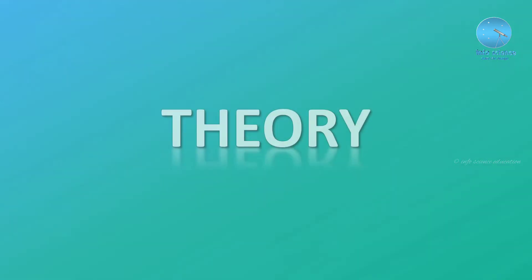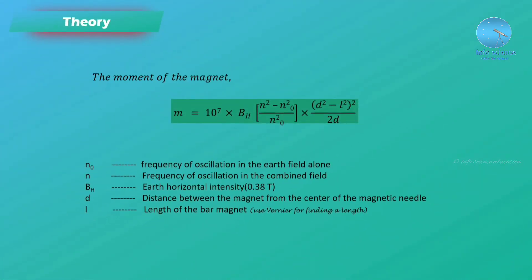Moving to the theory of this experiment. We are finding the magnetic moment of the magnet. The equation is: M = 10^7 × B_H × (N² - N₀²) × (d² - l²)² divided by 2d. Here, N₀ is the frequency of oscillation in the earth field alone, N is the frequency in the combined field, B_H is the earth's horizontal intensity, d is the distance of the magnet from the center of the magnetic needle, and l is the half-length of the bar magnet.